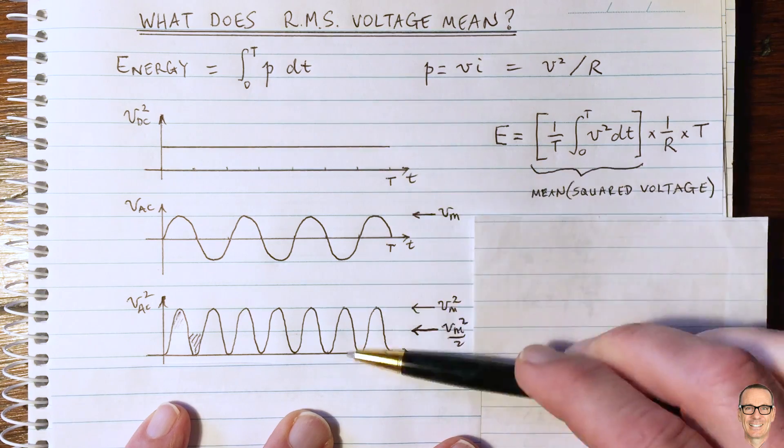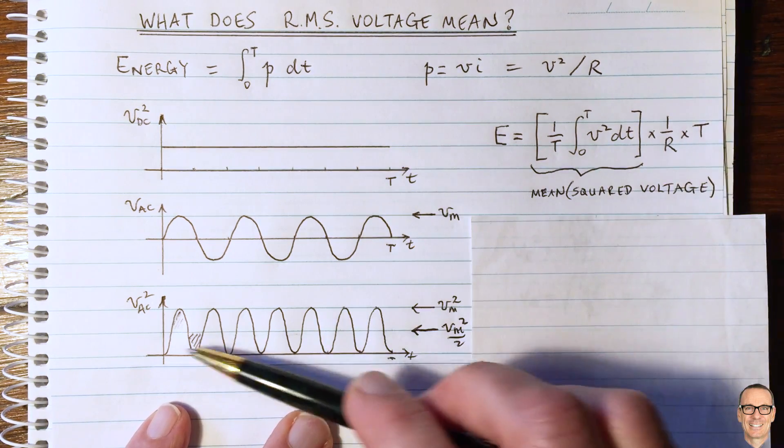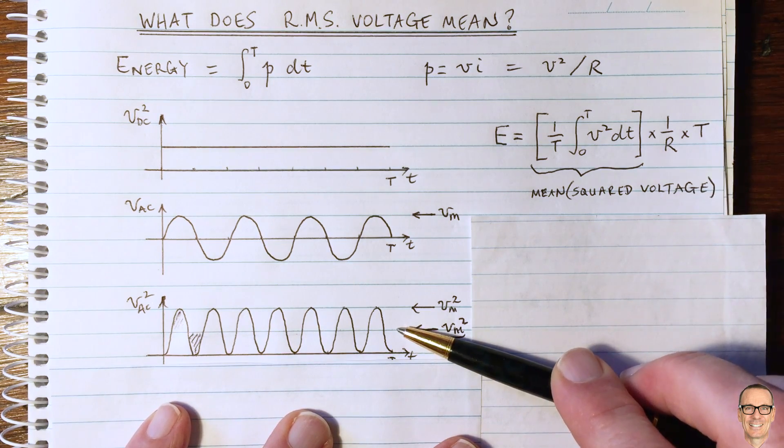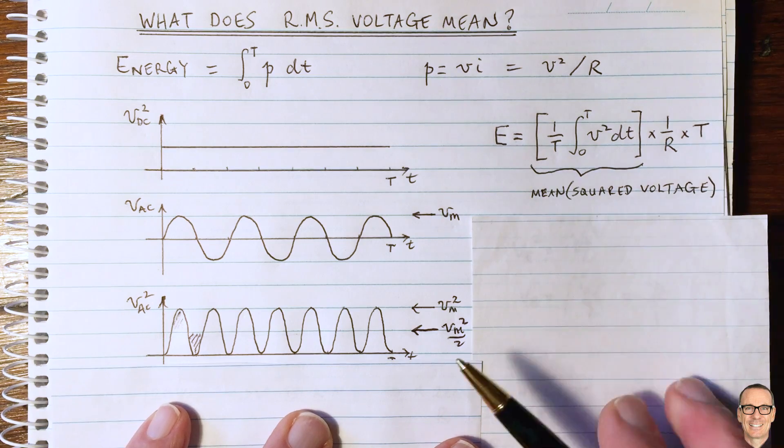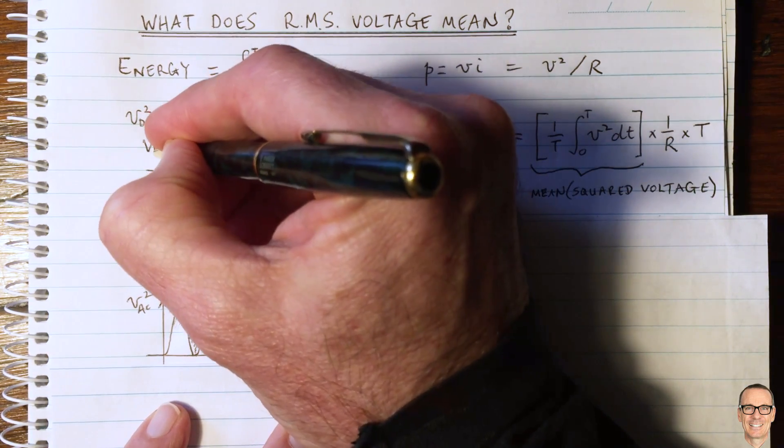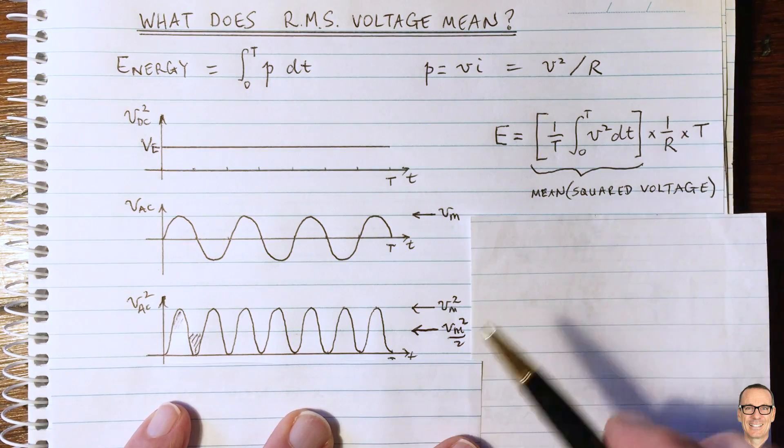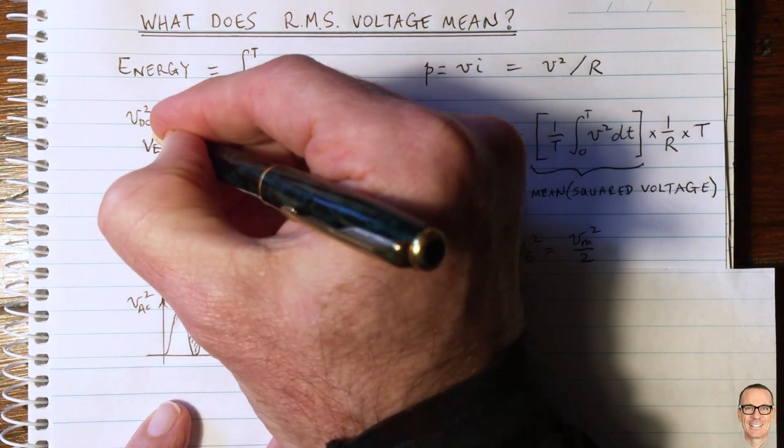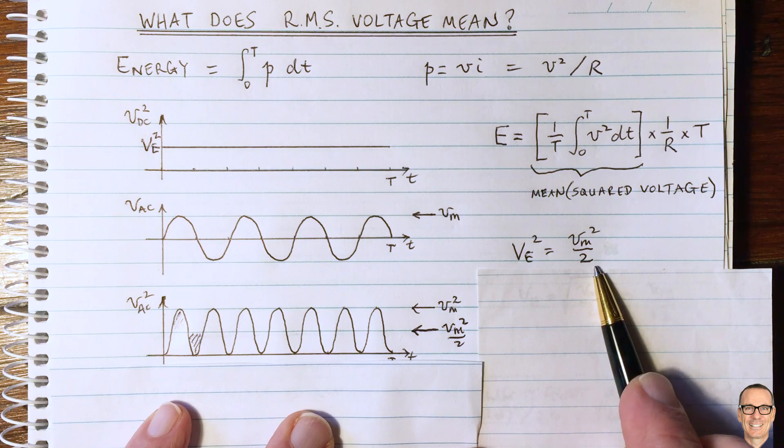And now we can see the equivalence between the AC case and the DC case. If this is a constant across here from a power point of view, the calculation for energy and power are the same. So that leads us to think of an equivalent DC voltage for the AC case. So I'm going to call this VE here for equivalent. And so we've got that VE squared. Sorry, this is VE squared. So VE squared equals Vm squared on 2.